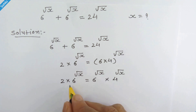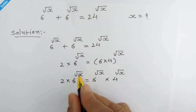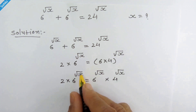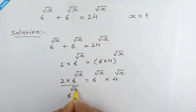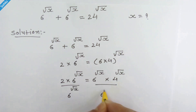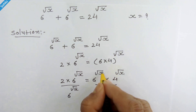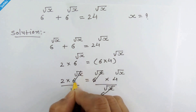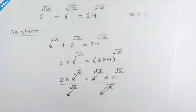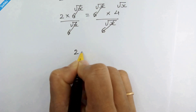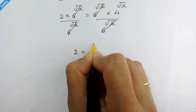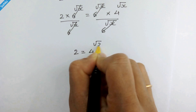In the next step, to eliminate 6 raised to square root of x, we will divide both sides by 6 raised to square root of x. Now we have 2 is equal to 4 raised to square root of x.